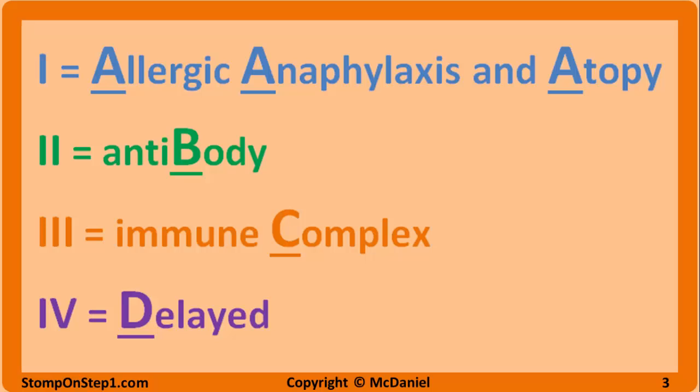The way I remember it is my ABCD mnemonic. There's another similar mnemonic that other people use — ACID — but I like mine better. Types 1 through 4 correlate to A through D, which makes sense: 1A, 2B, etc.